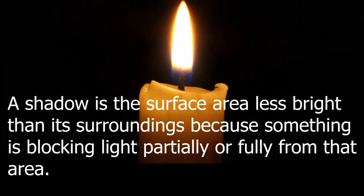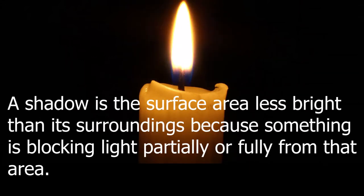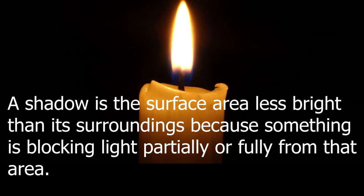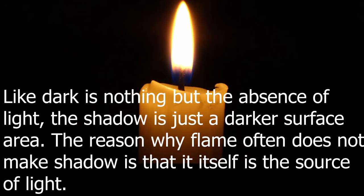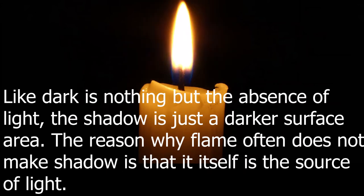A shadow is the surface area less bright than its surroundings because something is blocking light, partially or fully, from that area. Just as dark is nothing but the absence of light, a shadow is simply a darker surface area.